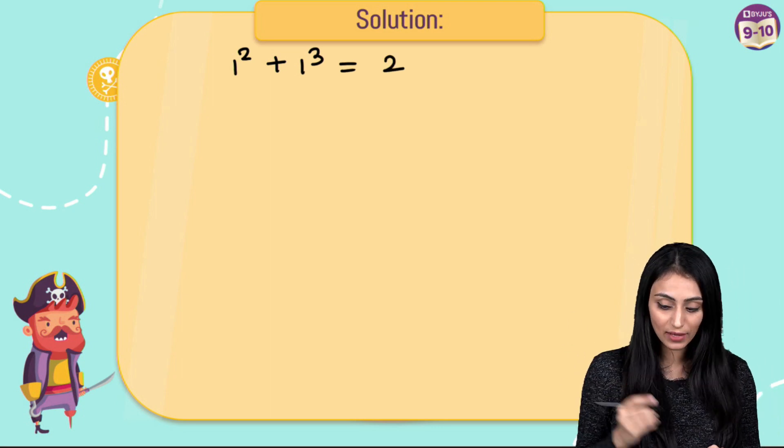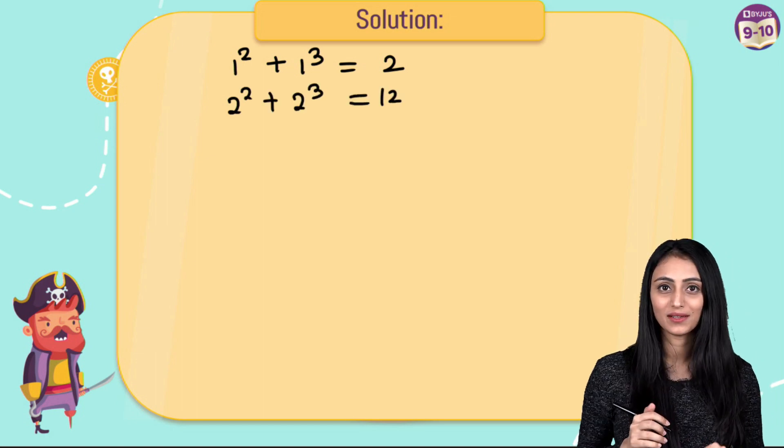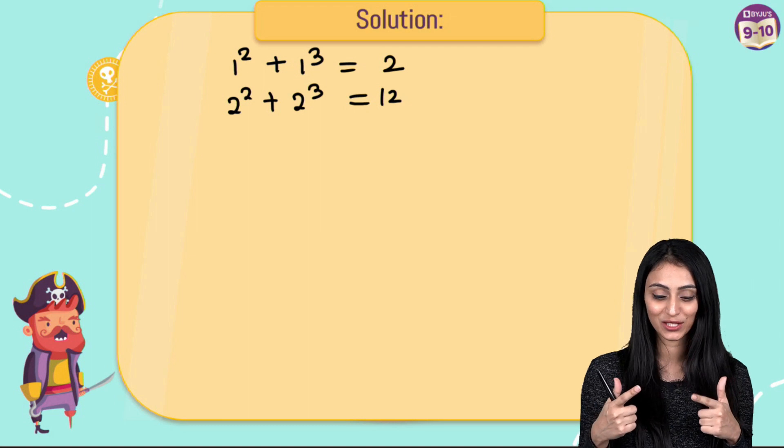Another one was 12. So that could be written as 2 square plus 2 cube, that would be 12. Now I am sure that you have understood, right? You have guessed the pattern.